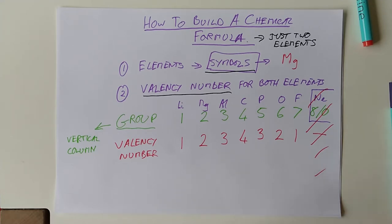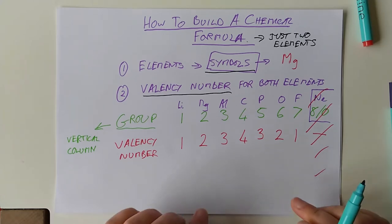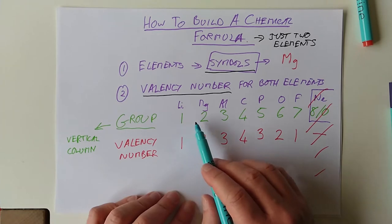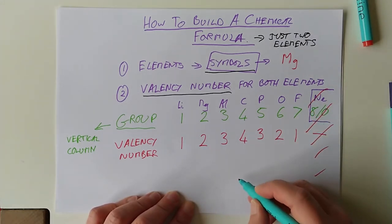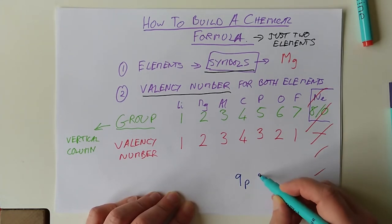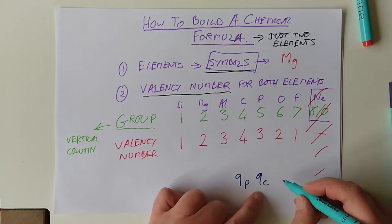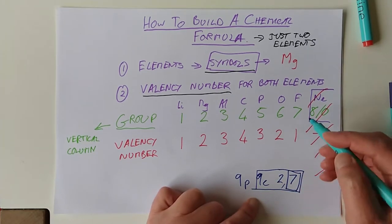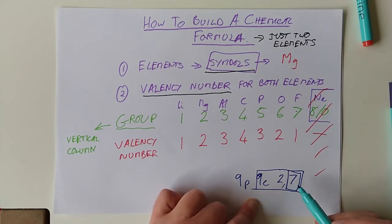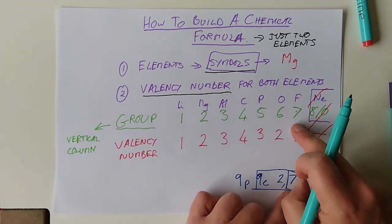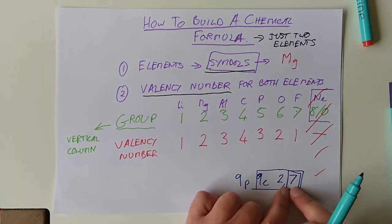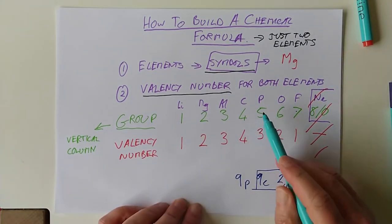5, we start to go down again. The valency number is 3, 2, 1. So, everything in group 7 will have a valency of 1. And of course, group 8 will have a valency of 0. I don't even bother putting that in because group 8s don't form compounds, do they?